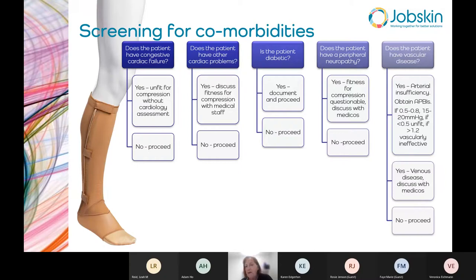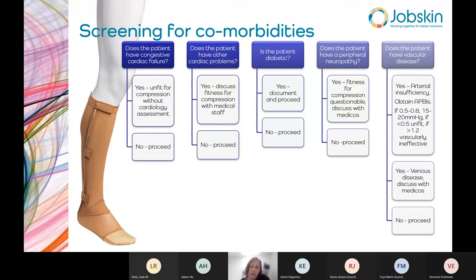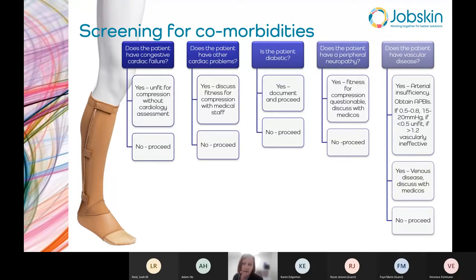Consider whether the patient is diabetic — if purely diabetic, document it and proceed. But ask whether they have peripheral neuropathy. If they do, assess whether they are fit for compression. If they are patients known to be poor at caring for their foot health — with history of burns on hot concrete, untended lacerations, or unnoticed skin breakdown — then compression should be avoided.